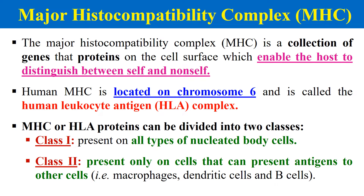In the case of humans, the genes of this MHC molecule are present on chromosome 6. This complex is known as the HLA — Human Leukocyte Antigen Complex. MHC consists of two classes: Class 1, which is present on all nucleated cells, and Class 2, which is present only on cells involved in antigen presentation.